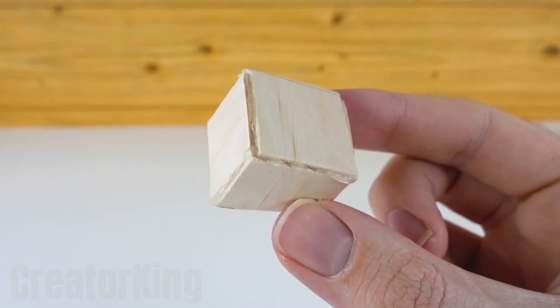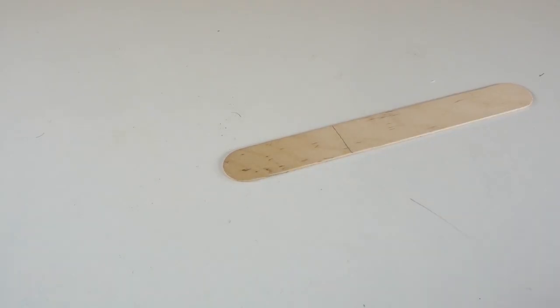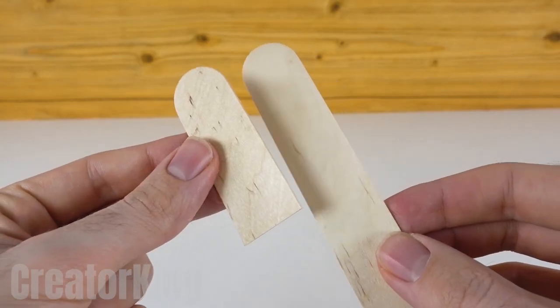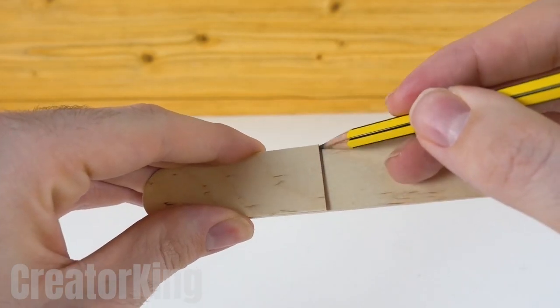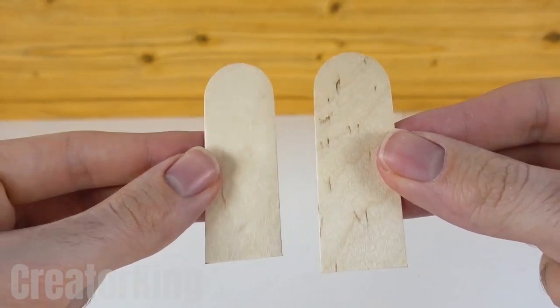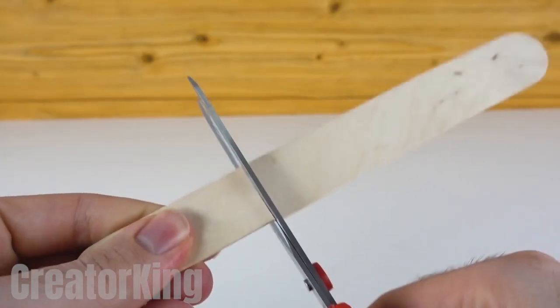On another popsicle stick, mark a line at 7 cm with a pencil. Cut this part with scissors and then repeat this step with the other stick. We need four of these, so move those little hands. Inventions do not create themselves.